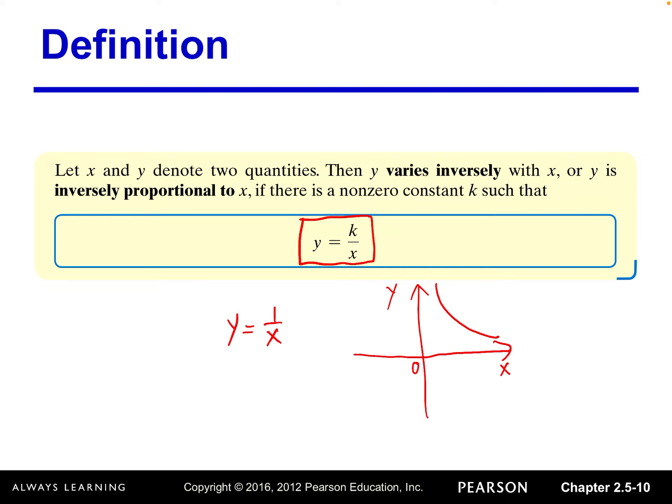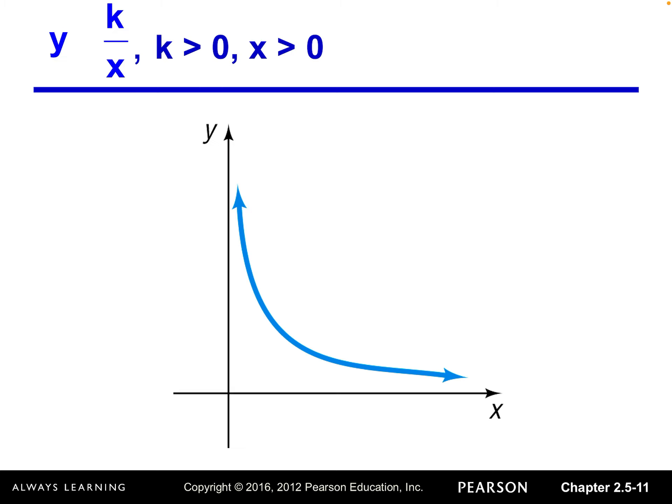So inverse variation is just like a basic function, reciprocal function, multiplied by a constant k, multiplied by a coefficient. So here is the graph, very similar as the reciprocal function.